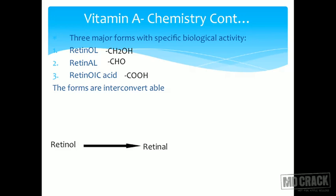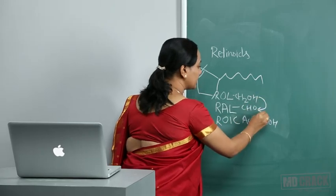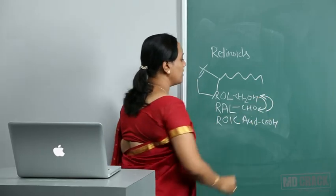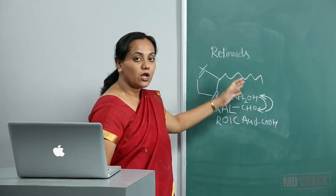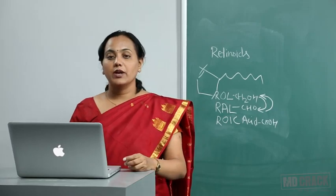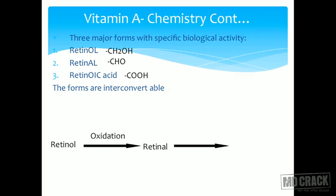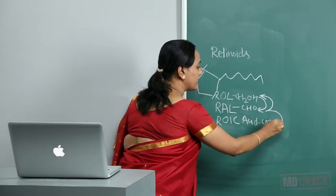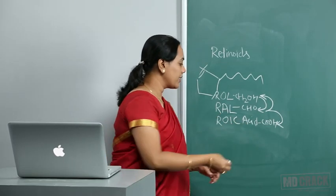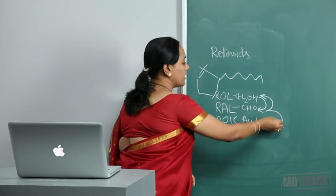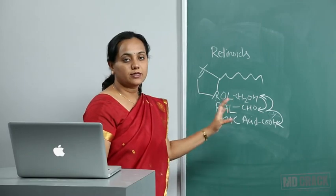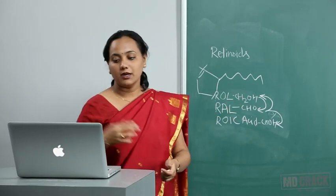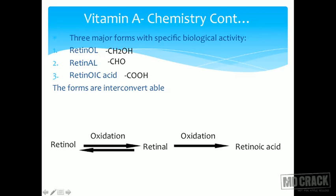The three forms are interconvertible to a degree. Retinol (alcohol) can be oxidized to retinal (aldehyde), and this reaction is reversible — retinal can be reduced back to retinol. Retinal can be further oxidized to retinoic acid, and retinol can also be directly converted to retinoic acid. However, the reverse reaction — retinoic acid back to retinal or retinol — is not possible. Once retinoic acid is formed, it cannot be converted back.